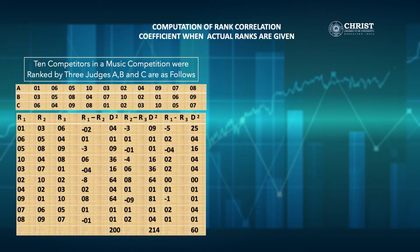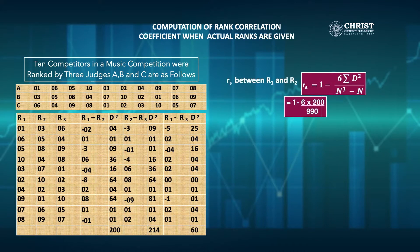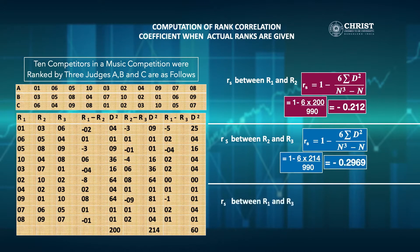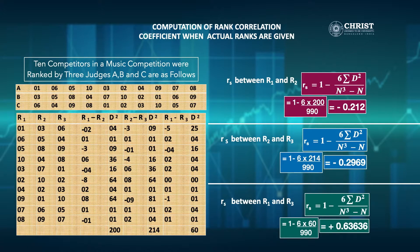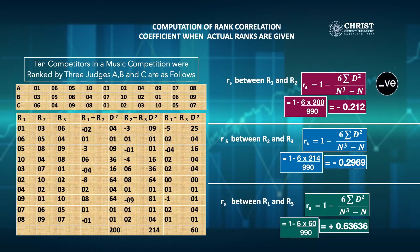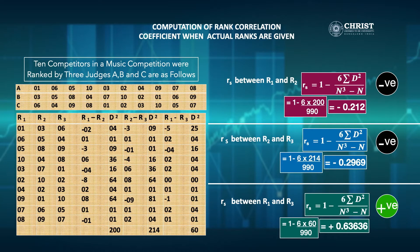Substituting the values into the equation, we get three rank correlation coefficients: R1 & R2 = −0.212, R2 & R3 = −0.2969, and R1 & R3 = +0.63636. The first two sets show negative correlation — R1 & R2 and R2 & R3 have no common taste in music. The rank correlation between R1 and R3 is positive, so the judges R1 and R3 have the nearest approach to common taste in music.